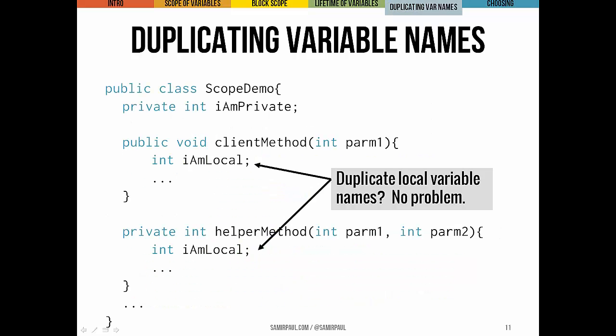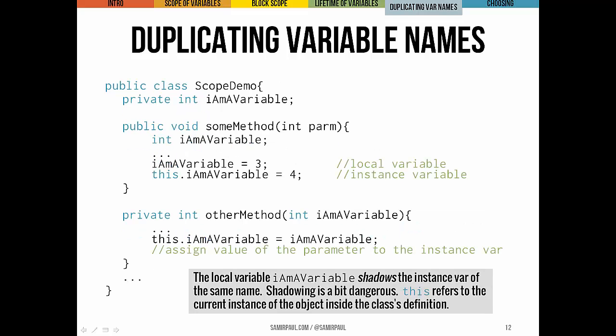Because local variables and formal parameters are limited in scope and lifetime to a single method, we can use the same name for different local variables in different methods without conflict. In client method and helper method, we can name our local variables both `iAmLocal` — no problem. You can even use the same name for a local variable and an instance variable, as in `ScopeDemo`. We'd say that the local `iAmAVariable` shadows the instance variable `iAmAVariable`.